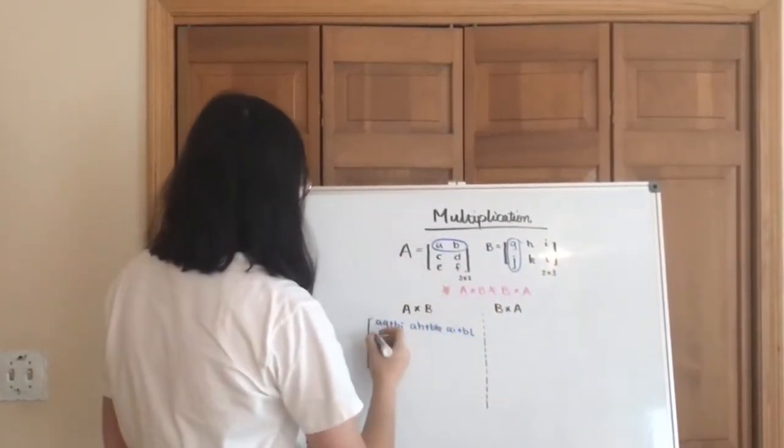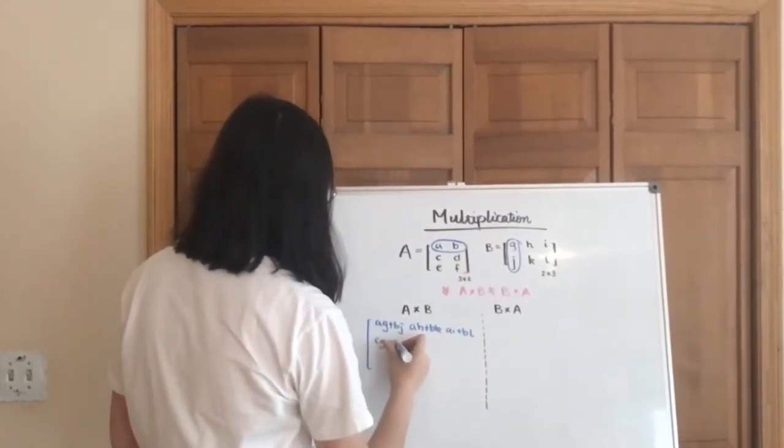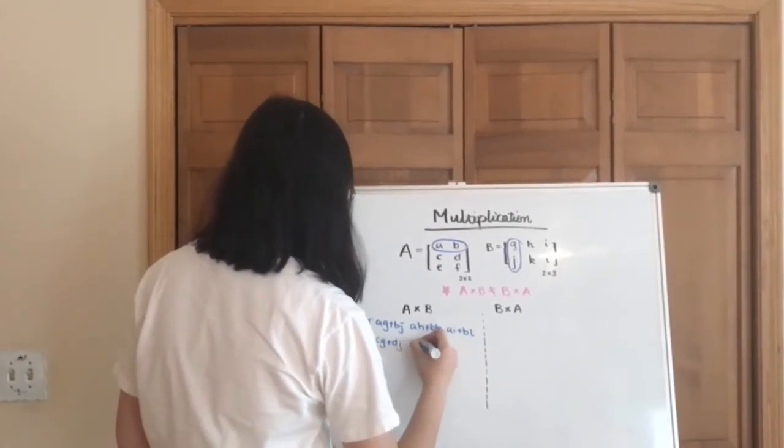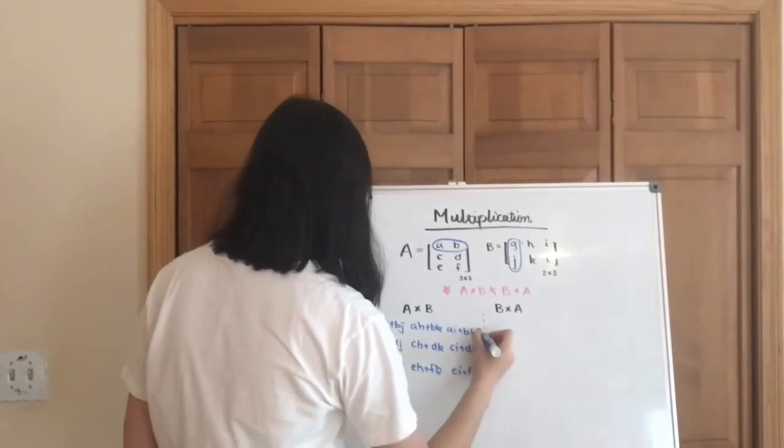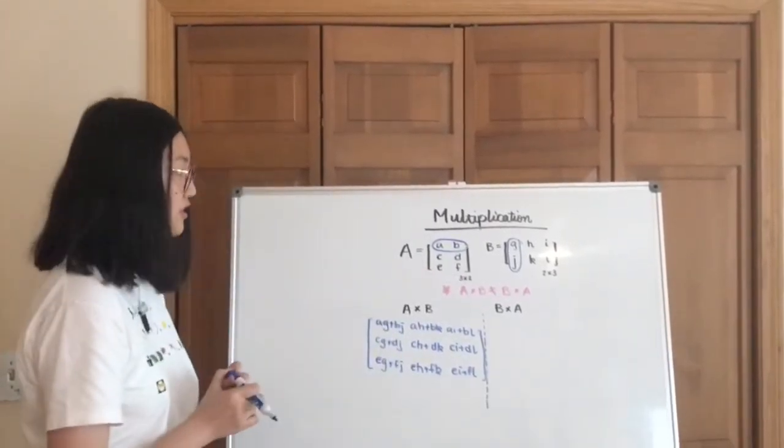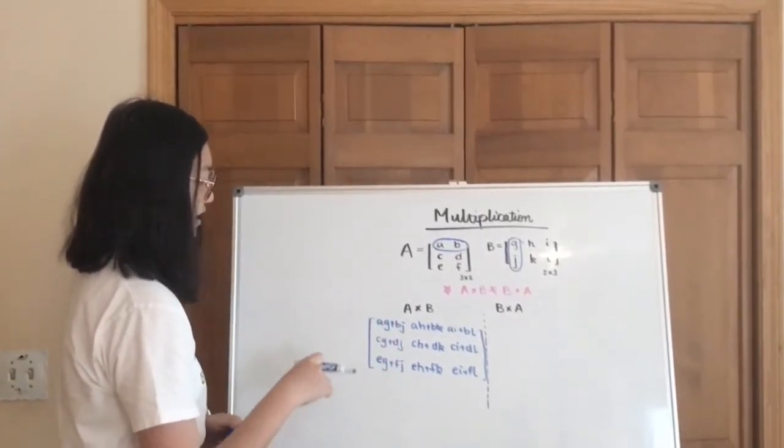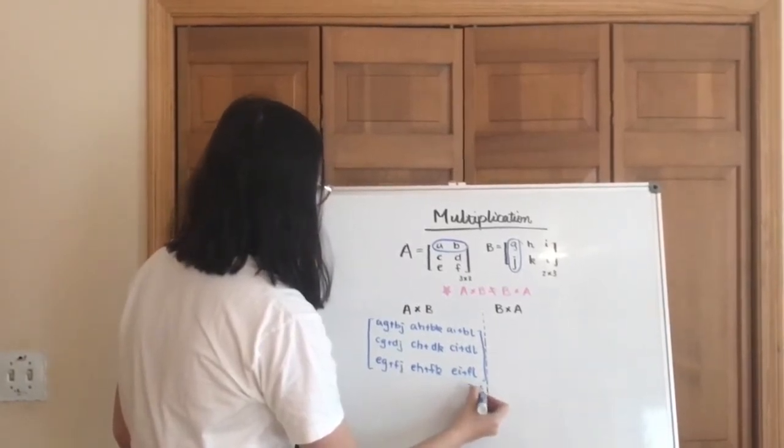So now I'm going to start with c and d. So c multiplied by g again, add d by j, etc. And so you can see that a is a 3 by 2 matrix and b is a 2 by 3. But once you multiply a by b, that gives you a 3 by 3 matrix. So the dimension changes.